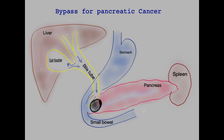Looking at this tumour over here, you can see that it is already impinging on the bile tube and it's quite likely to cause jaundice because it can completely obstruct the bile tube. An increase in size may cause a complete obstruction. If there is no previous stent or tube inside the bile tube to drain the jaundice, the surgeons may opt to perform a bypass, which basically means bypassing the path of the bile away from this obstruction.